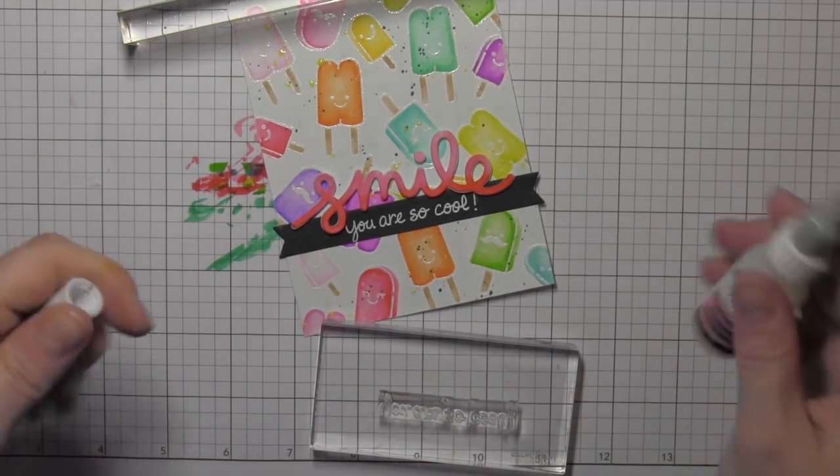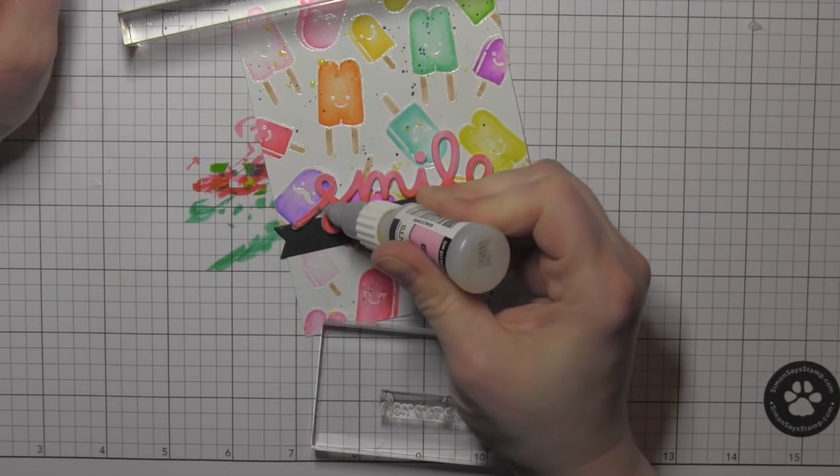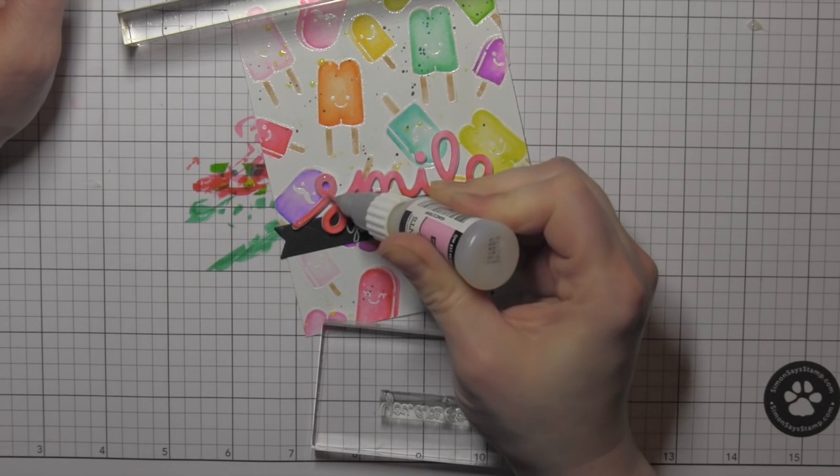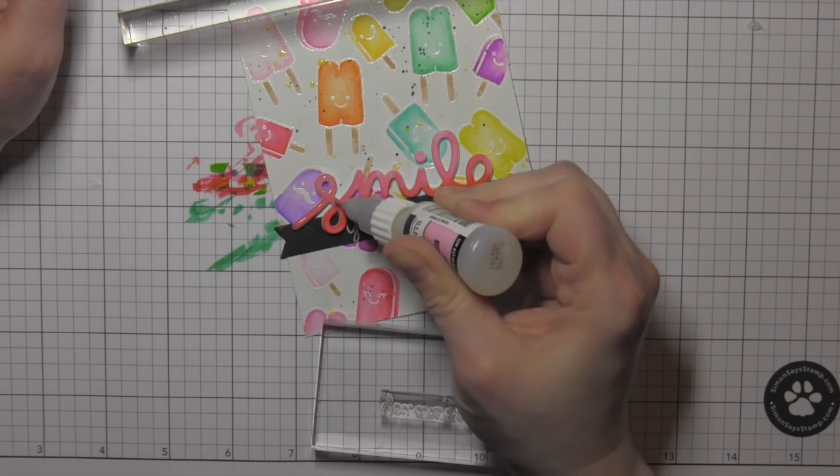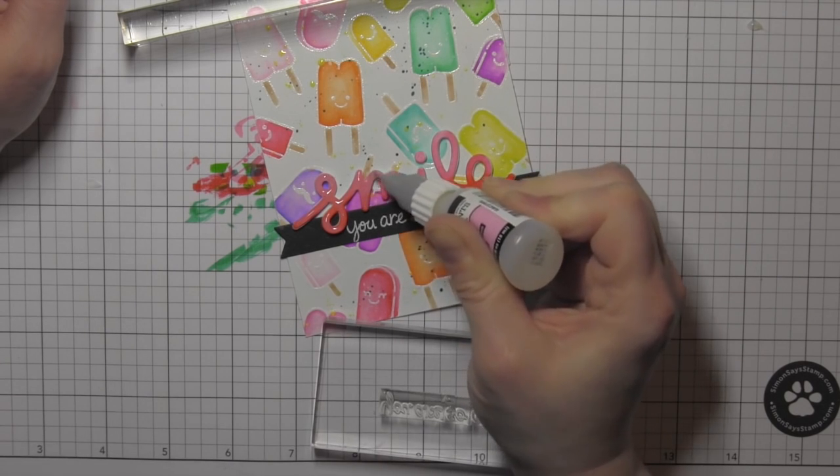I also decided to take some Glossy Accents and I am going to just draw over the word smile with the Glossy Accents, and it's going to give it some really nice shine, really make that word pop even more.